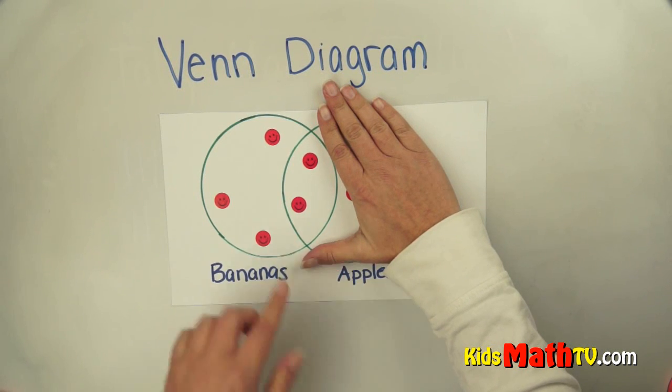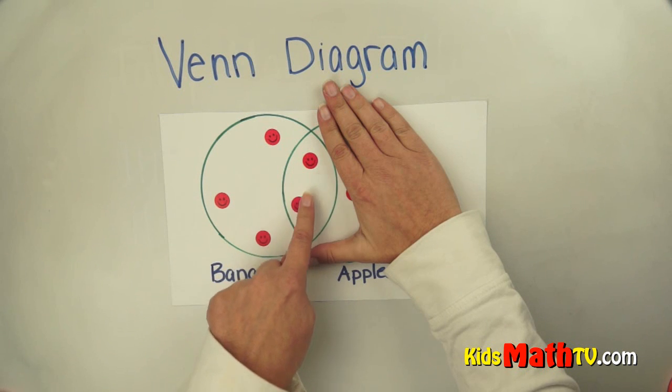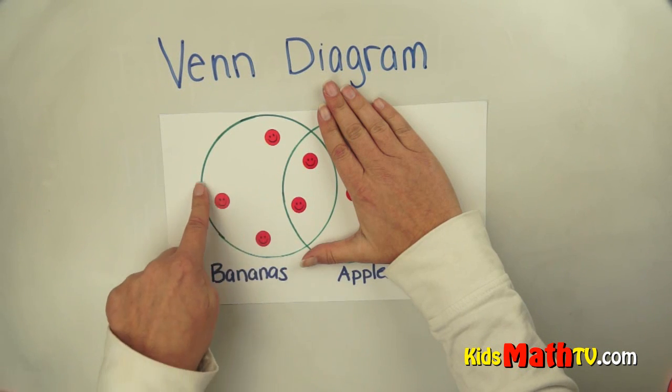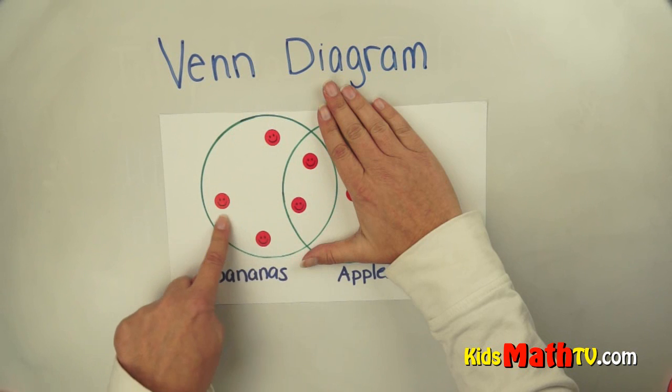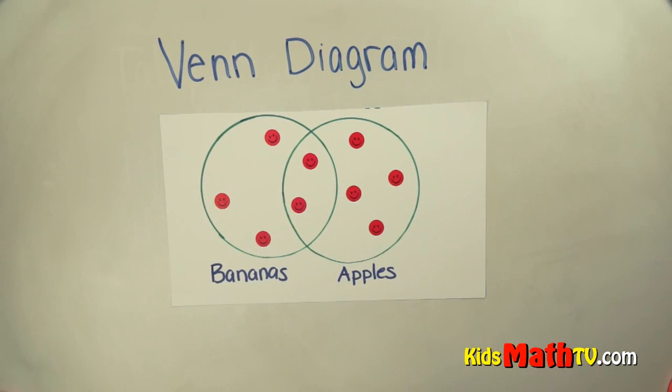If I count there are 1, 2, 3, 4, 5 people in this bananas circle. Five people that like bananas.